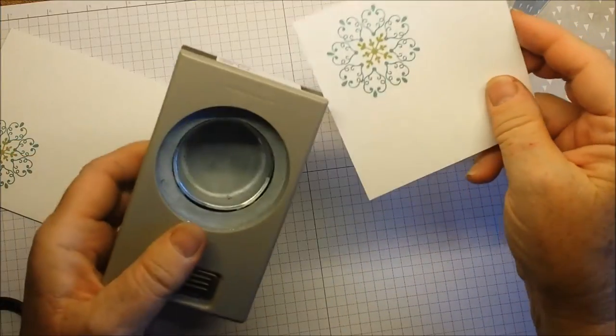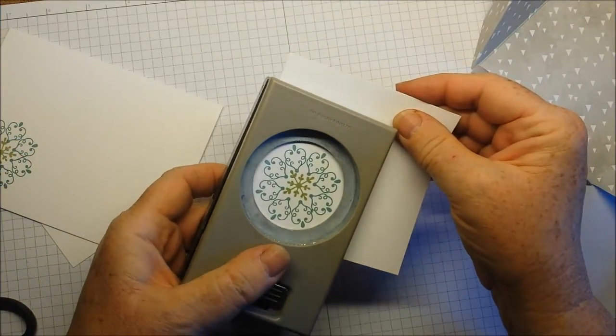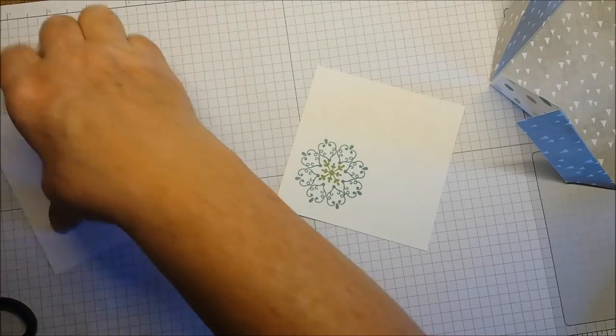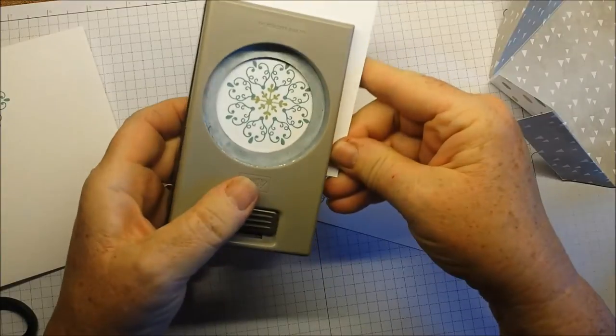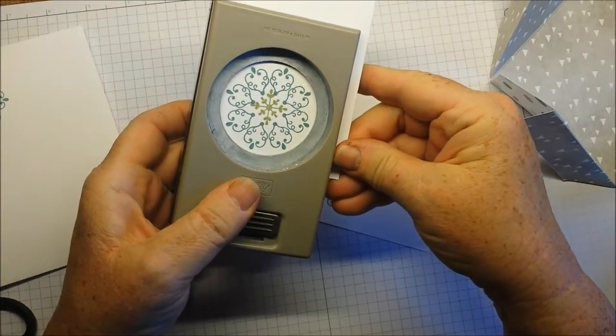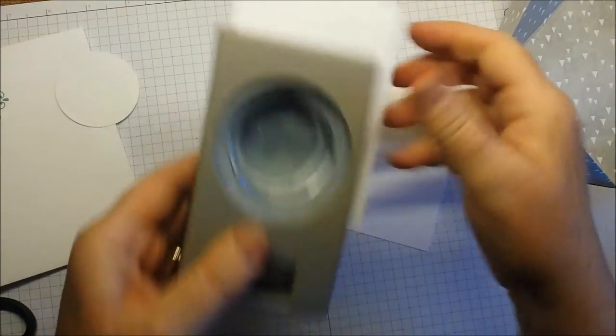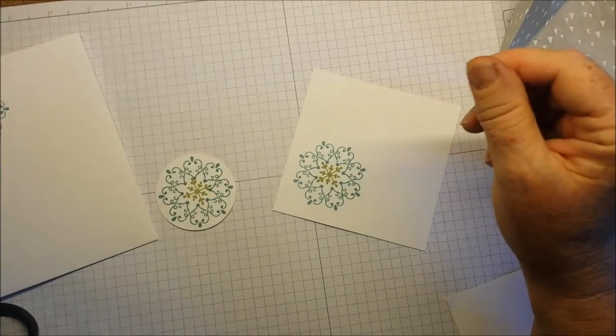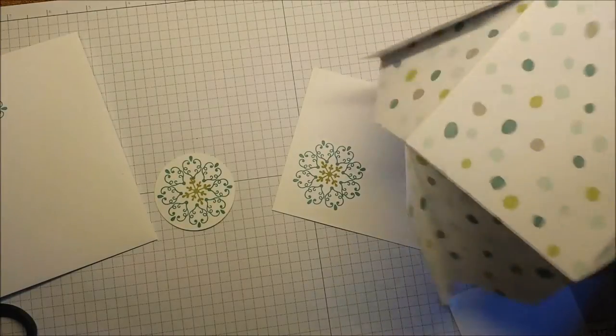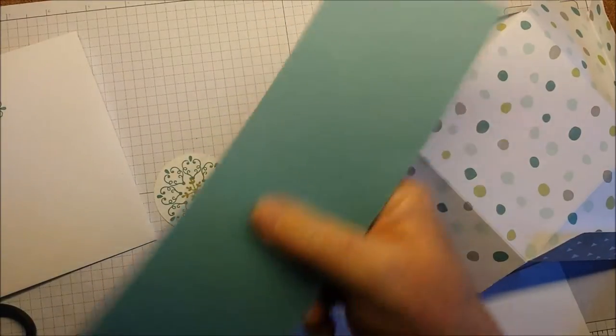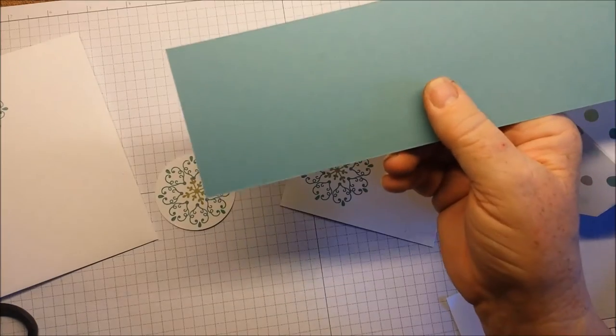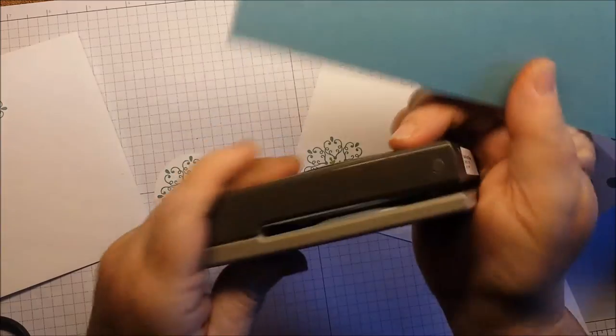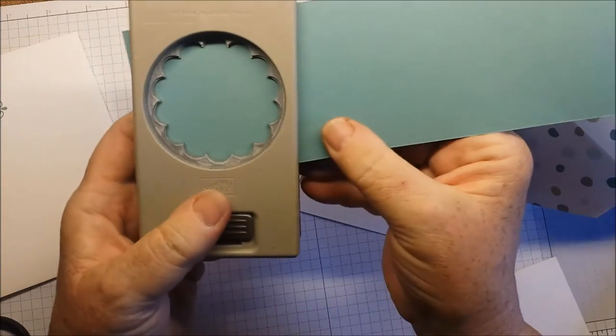I'm using the 2 inch circle punch to punch out the one on the scrap of Whisper White cardstock. And then I think I'm going to use the Lost Lagoon for my accent color. And I'm using the 2 and 3 eighths scallop circle punch.